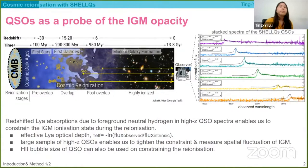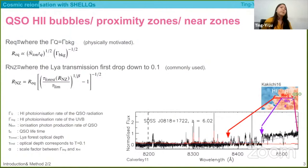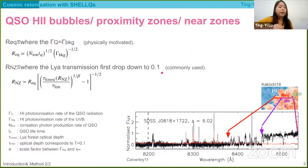Another quite common way to measure reionization with quasar spectra is measuring the HII bubble size, which is also called the near zone size or the proximity zone size. The proximity zone is basically the distance from the quasar to where the quasar radiation equals the background. But observationally, we measure it by finding the distance from the quasar to where the transmission drops to 0.1, which requires fewer assumptions.